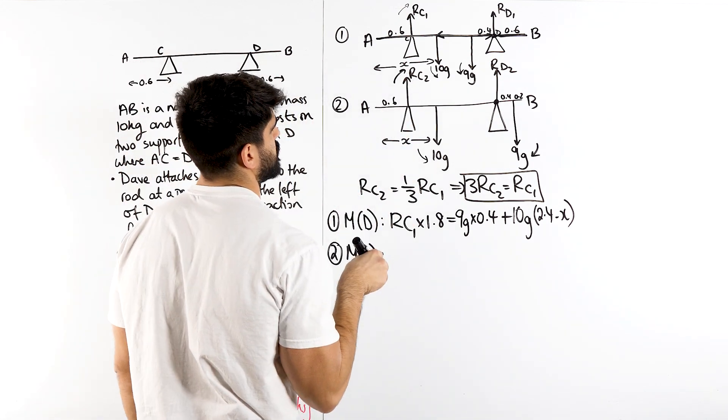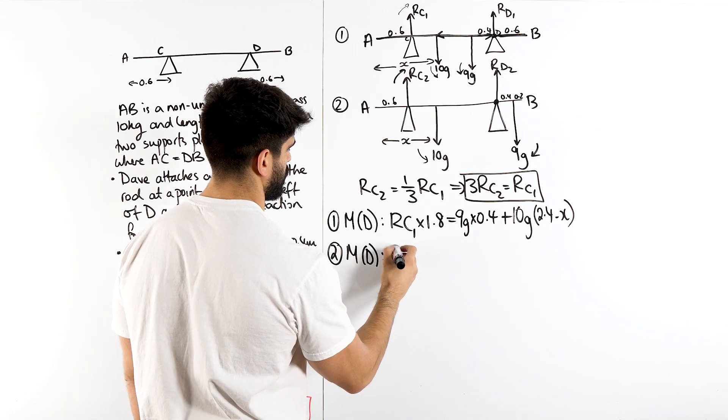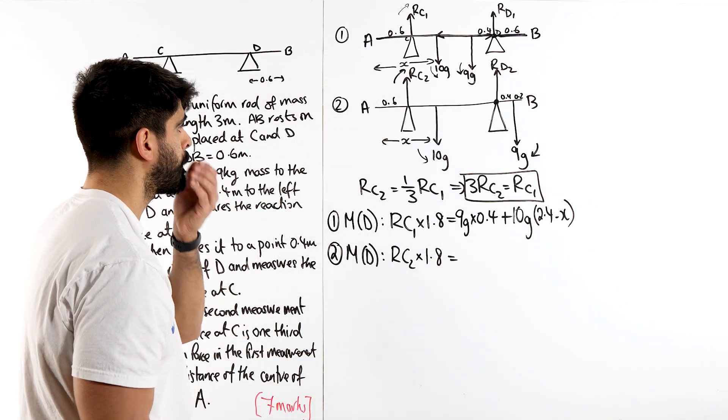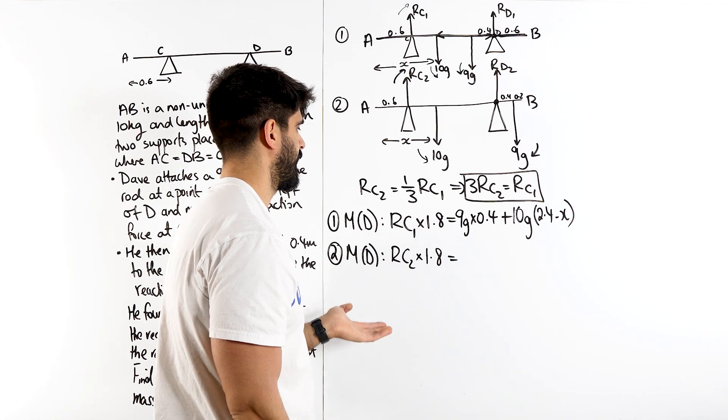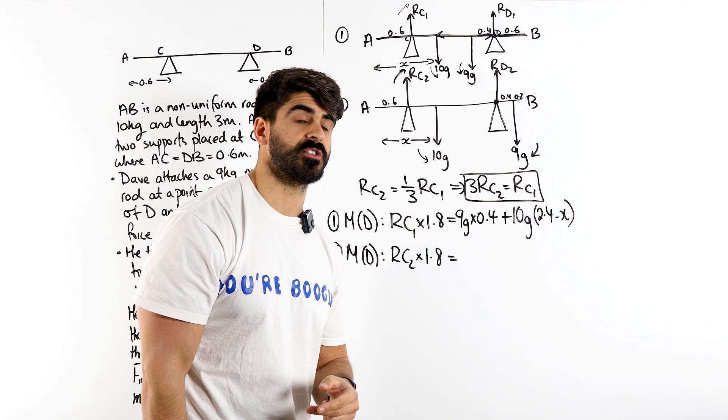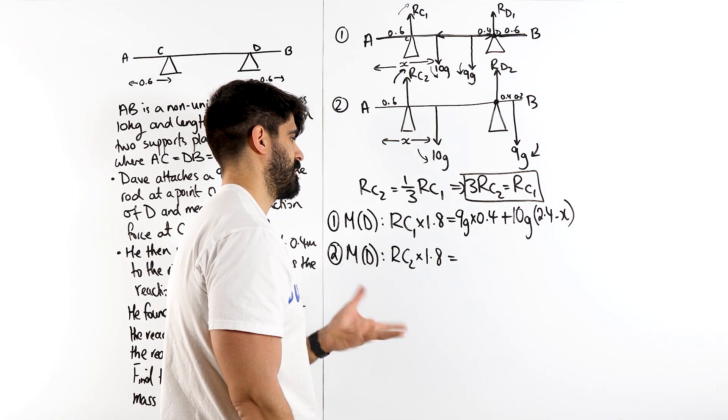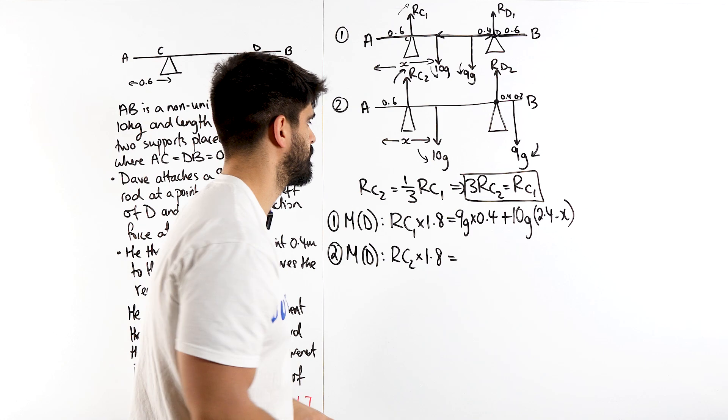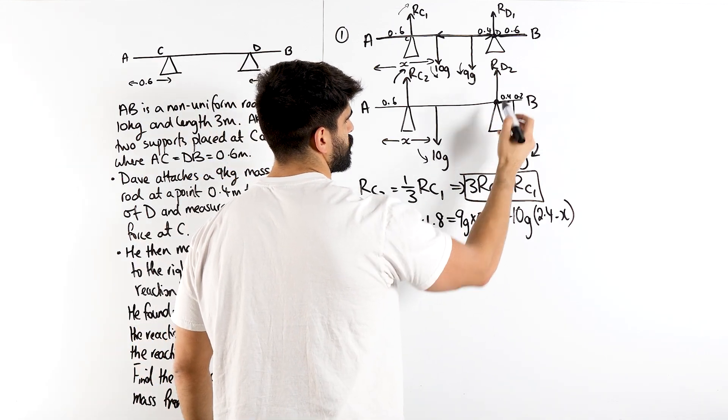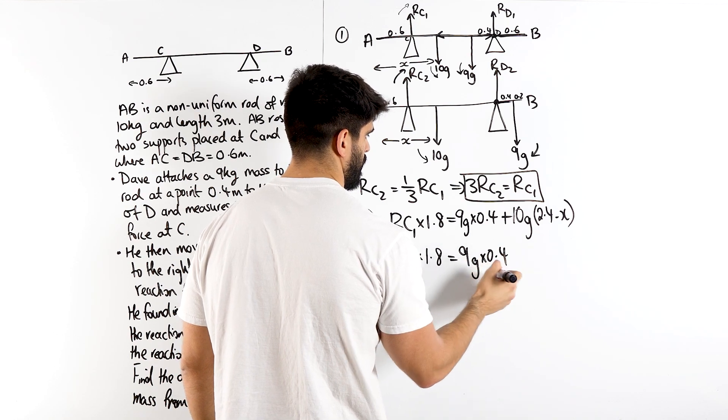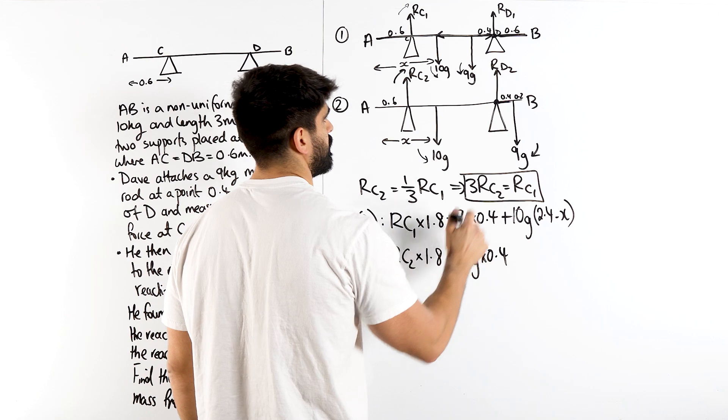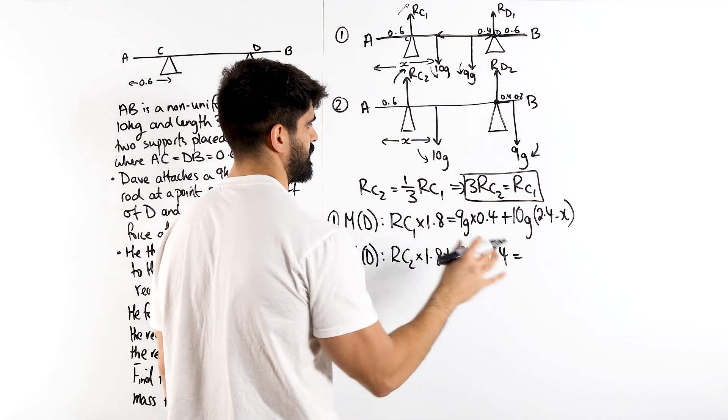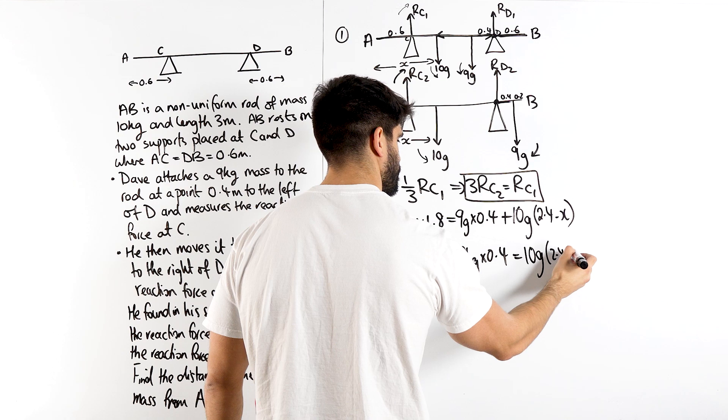So let's talk about RC2 first. So RC2, also times 1.8, that hasn't changed. Now I'm tempted to change it right now, because then I could cancel things out. I could change that RC1 to being 3RC2. Should I do it now? Should I not do it now? Maybe, maybe not. I'm not sure. I'll do it in a sec. So that 1.8, is the 9G times that distance 0.4. So it's the same as this one, it's just it's on the other side. Remember, this one is together with this one, so we're actually adding it. Equals that distance times 10G, which again is the same as this.